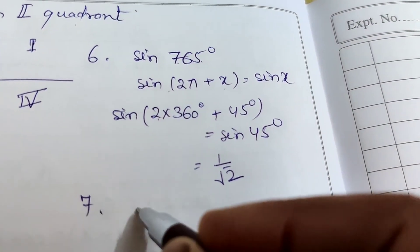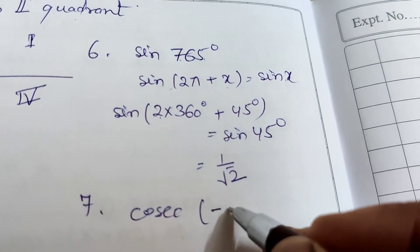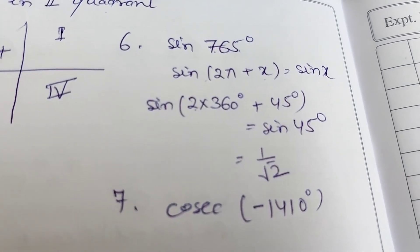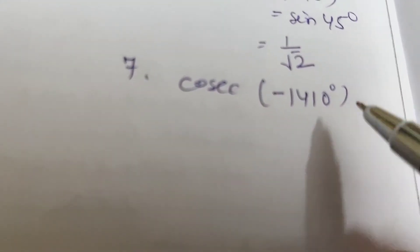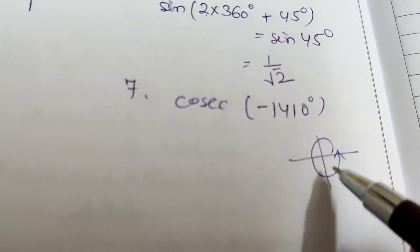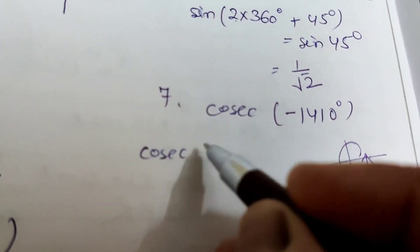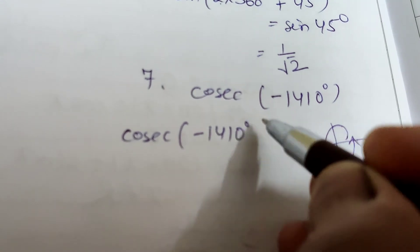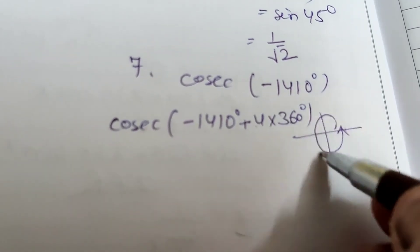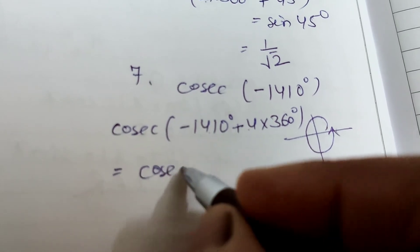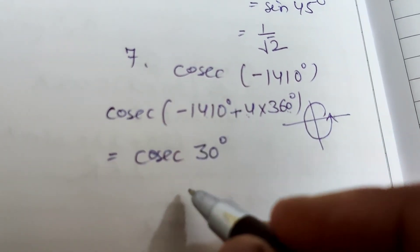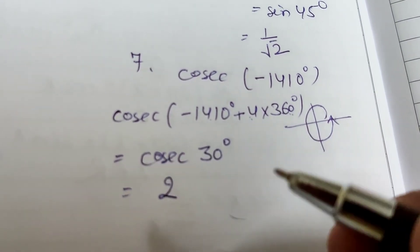Question 7: cosec(-1410°). Values repeat after every 2π (360°). We can write -1410° + 4×360° = -1410° + 1440° = 30°. So cosec(-1410°) = cosec 30° = 2.